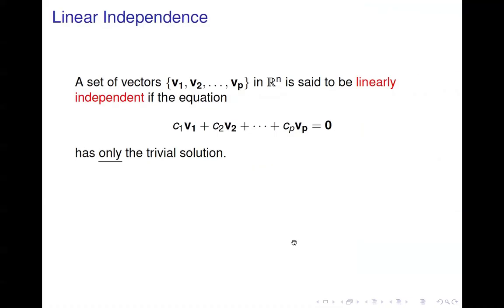Today we're going to talk about the concept of linear independence. If we have a set of vectors — say p vectors in Rn — the set is said to be linearly independent if we take a linear combination, set it equal to the zero vector, and this equation has only the trivial solution. So the only way we can take a linear combination of the vectors and get the zero vector is if all the coefficients are equal to zero.